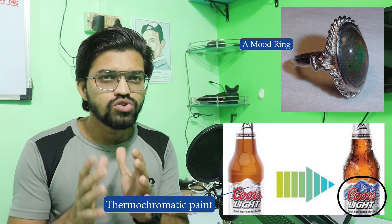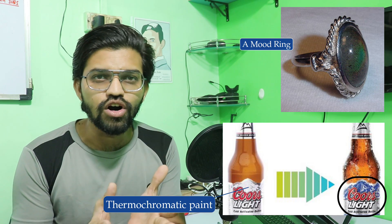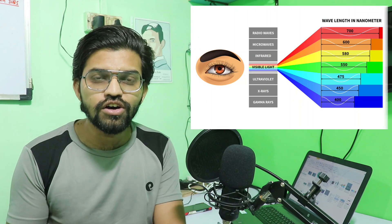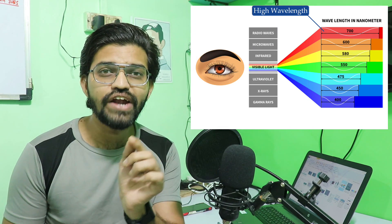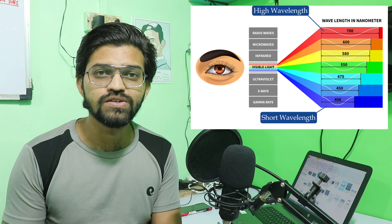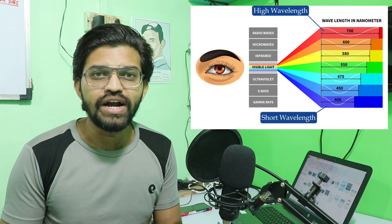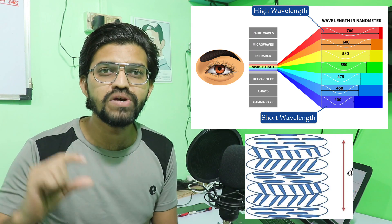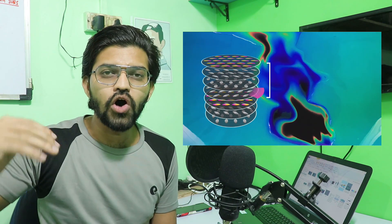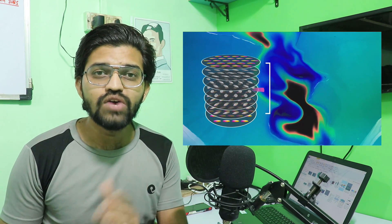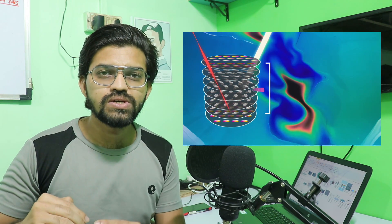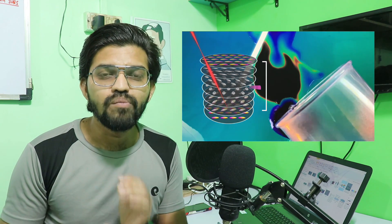How does thermochromatic paint actually work — how does it change its color? From the electromagnetic spectrum of visible light, we know red light has a higher wavelength of around 700 nanometers while blue has around 400 nanometers. The pitch — the distance between consecutive layers of the liquid crystals — determines which wavelength of light gets reflected back.